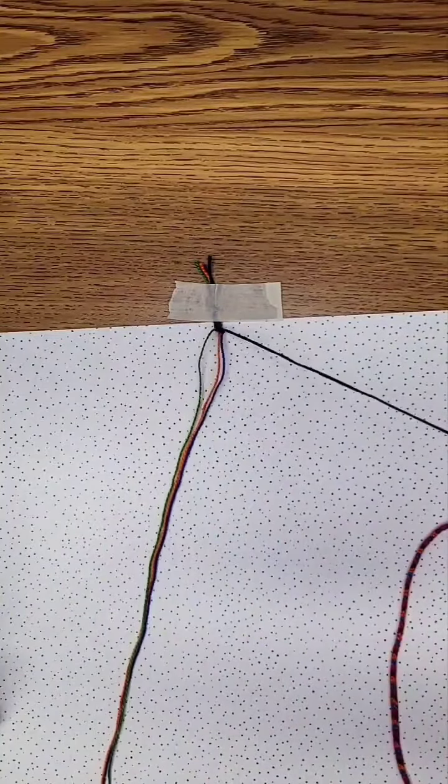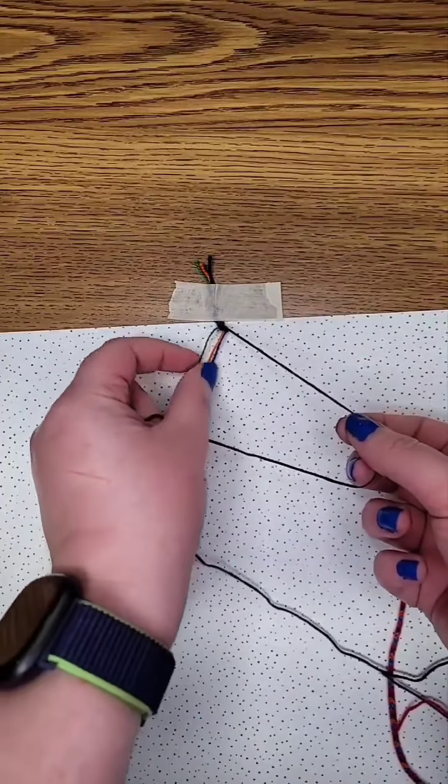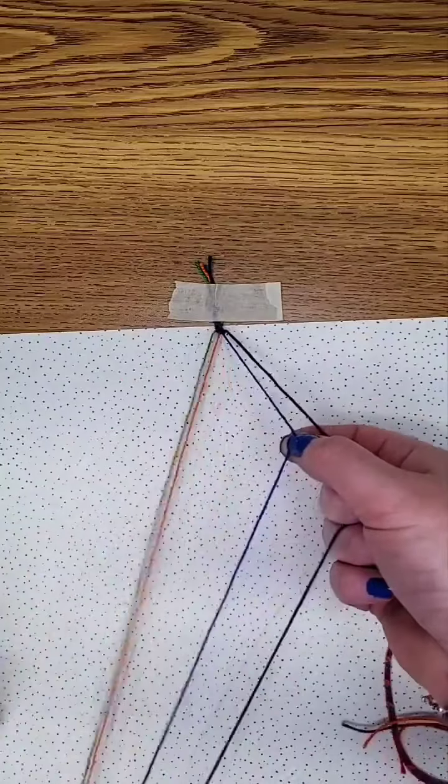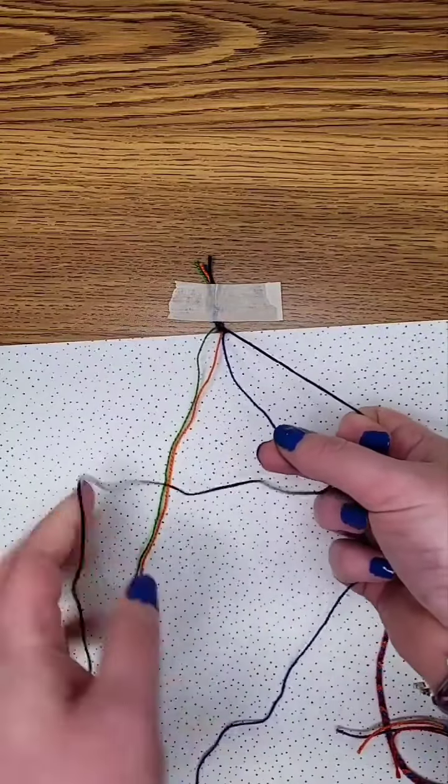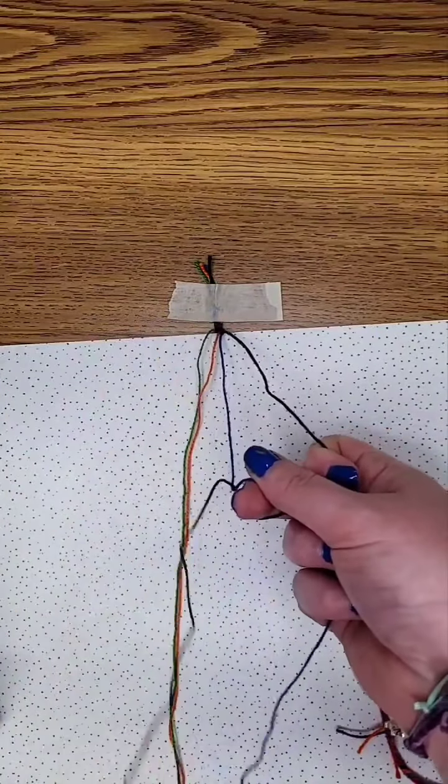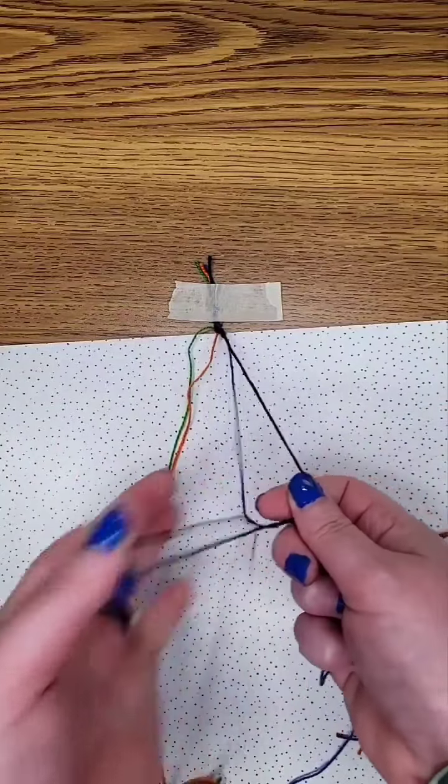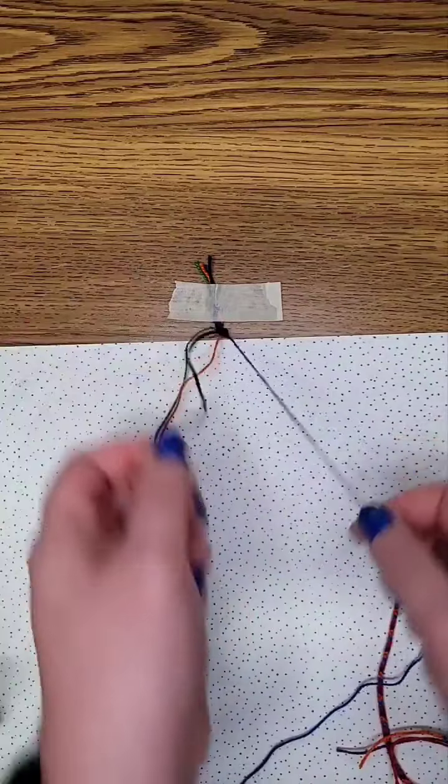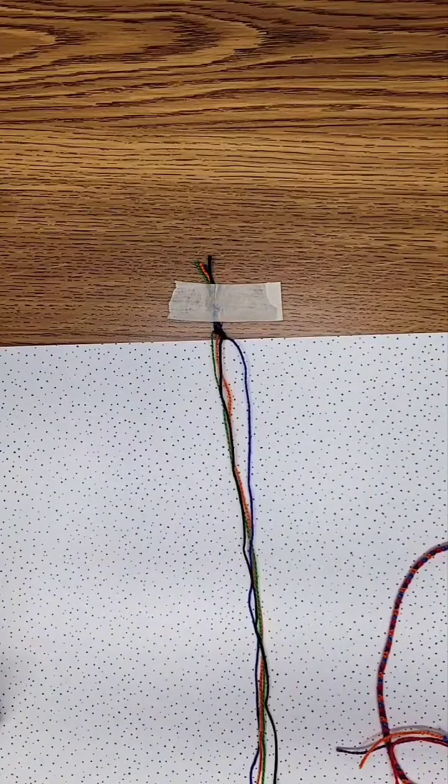So you take your rightmost, and you make a backwards four. And then you take the strand next to that, and you loop it over and under. And tie it twice. And continue to the left.